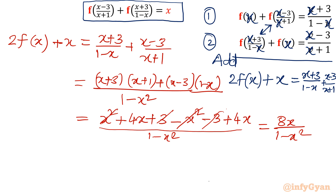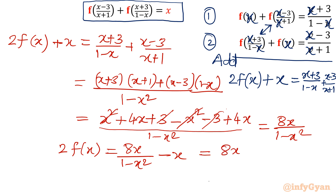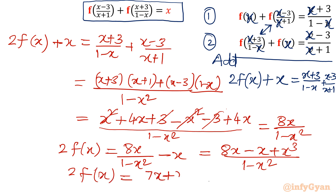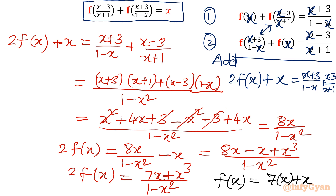Now dividing both sides by 2, our final answer is: f(x) equals (7x plus x cubed) divided by 2 times (1 minus x squared). This is the final answer for the function f(x).